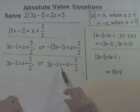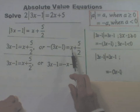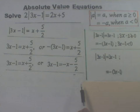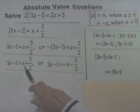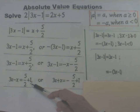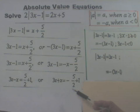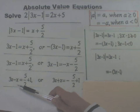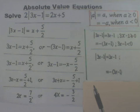This equation becomes 3x minus 1 equal to negative x minus 5 over 2. When you multiply by negative 1, remember to multiply both terms by negative 1. The next step: isolate x by subtracting x from both sides and adding 1 to both sides for the first equation, and adding x and 1 to both sides for the second. That gives you 3x minus x equals 5 over 2 plus 1, or 3x plus x equals negative 5 over 2 plus 1, which simplifies to 2x equals 7 over 2, or 4x equals negative 3 over 2.